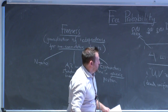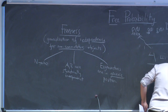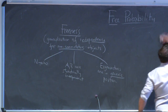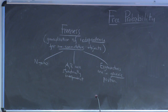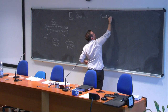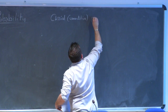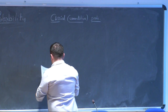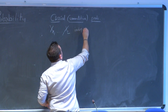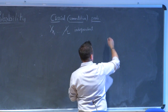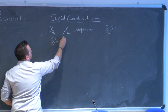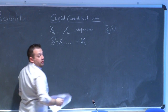Let's draw a parallel to standard probability. In classical commutative probability, if you have independent random variables drawn from certain PDFs and you construct their sum, there is an object called the characteristic function φ_X(t). If we are summing independent random variables, the characteristic function of the sum is the product of the characteristic functions. Taking the log, we define g_X(t) = log φ_X(t), and this relation becomes additive: g_S = g_X1 + ... + g_XL.